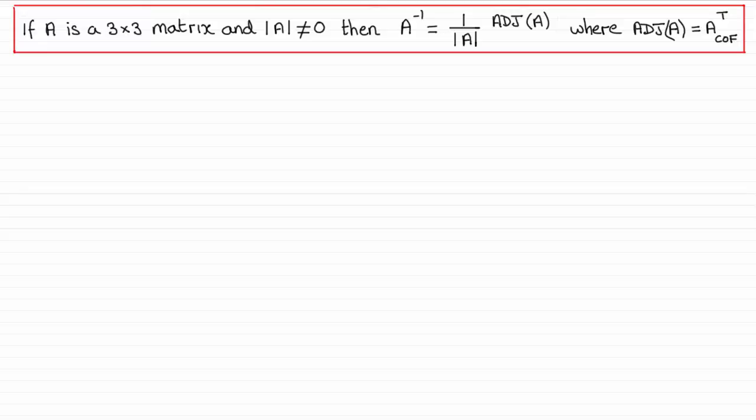So, let's just say that we've got a matrix A. Then, if its determinant doesn't equal 0, then the inverse of A is always 1 divided by the determinant of A, multiplied by what we call the adjoint of matrix A. The adjoint of matrix A is the cofactor of A transposed.